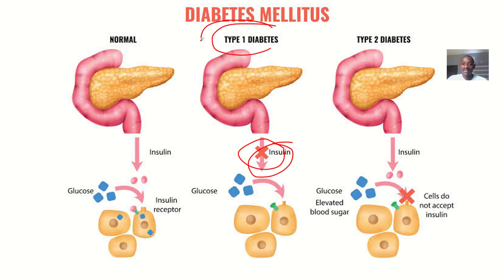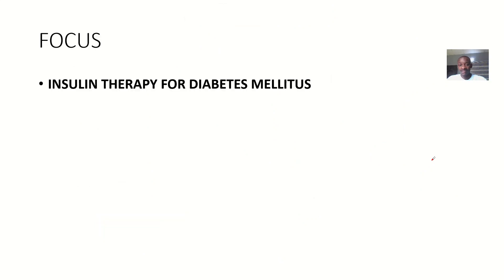Insulin therapy matches Type 1 diabetes more because in Type 2 diabetes, there is production of insulin, but the cells are actually resisting it.